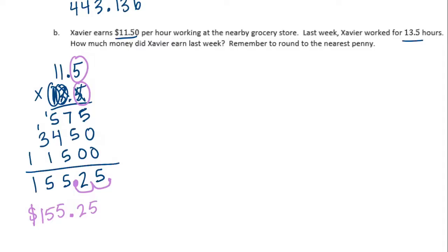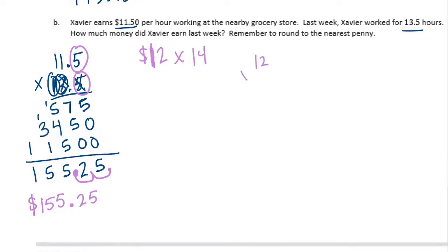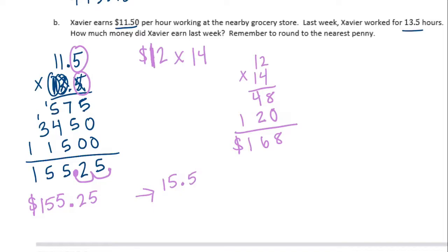Let's estimate to make sure the decimal point is in the right spot. I'll round eleven fifty to twelve dollars, and round thirteen and a half hours to fourteen. Twelve times fourteen: four times two is eight, four times one is four, one times two is two, one times one is one — we get about one hundred sixty-eight dollars. If the decimal was here, fifteen dollars is not close to one hundred sixty-eight. If it were here, one thousand five hundred fifty-two is also not close. There is our proof.